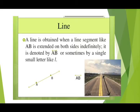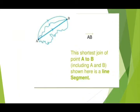The shortest join from point A to point B is a line segment. Point A से point B तक जाने के अलग-अलग रास्ते दिखाई देते हैं, लेकिन उनमें से जो सबसे short रास्ता होता है वो line segment वाला होता है।